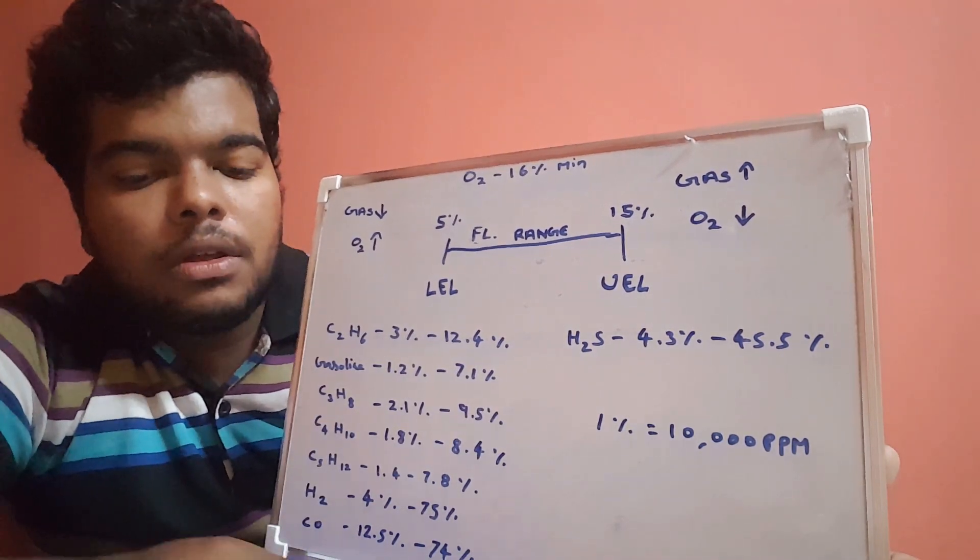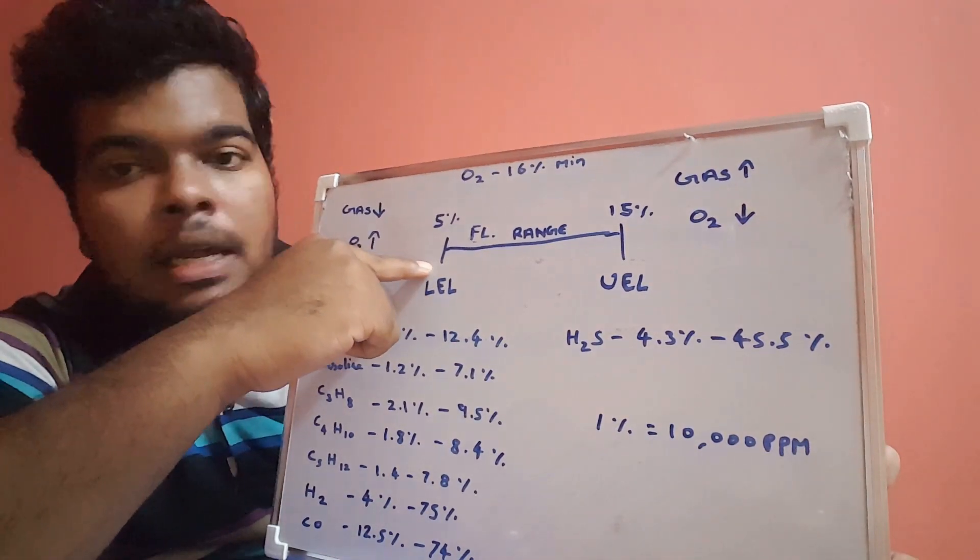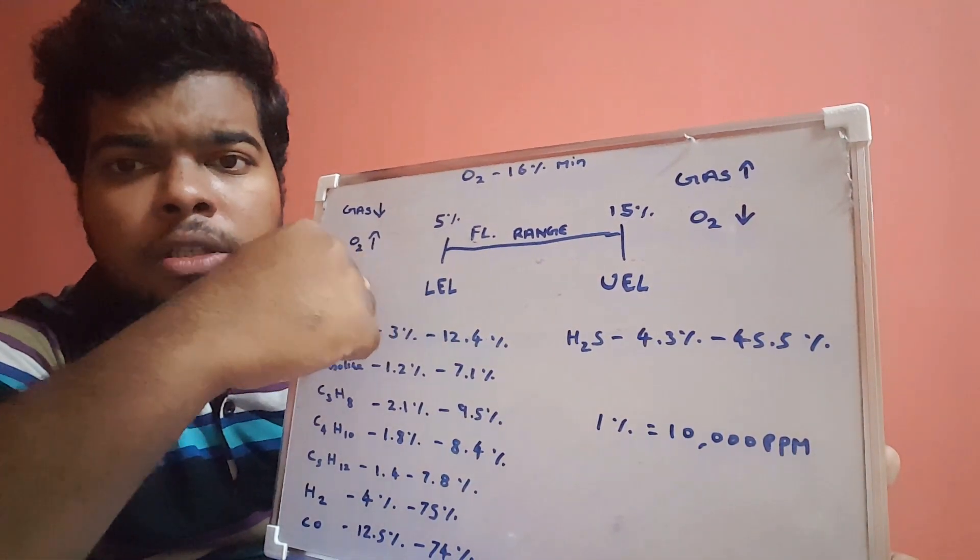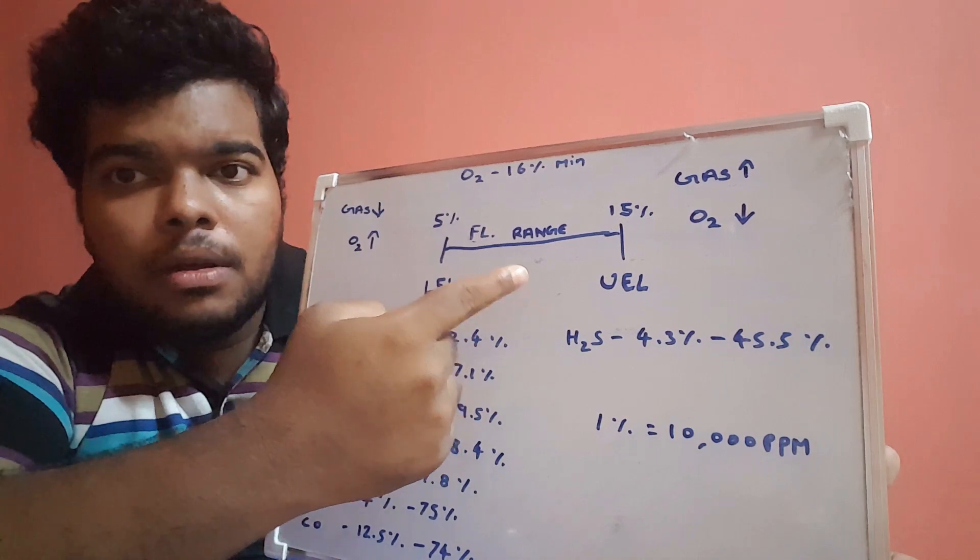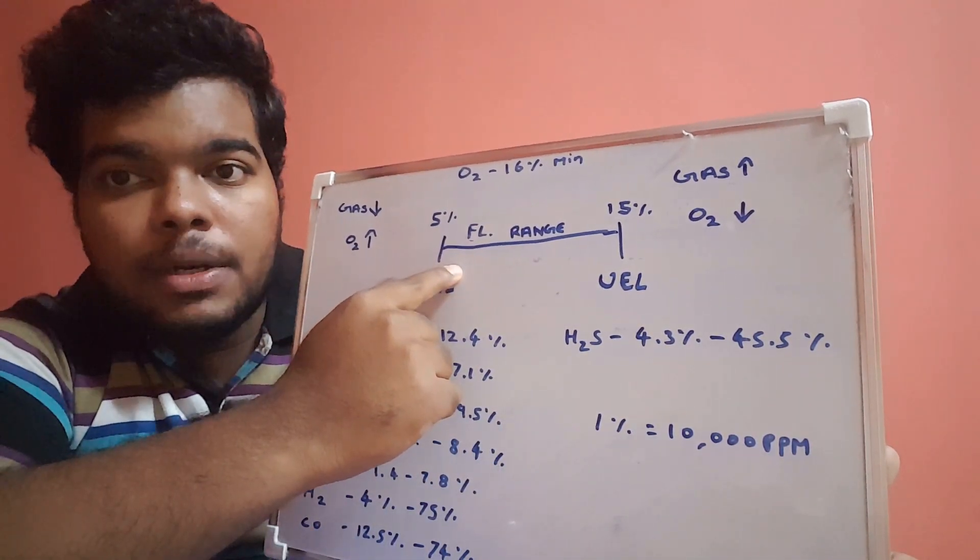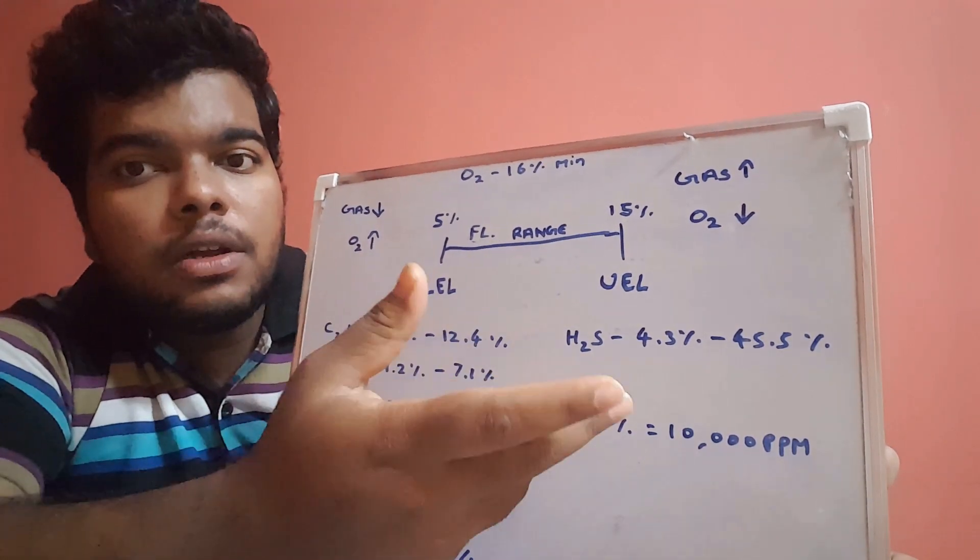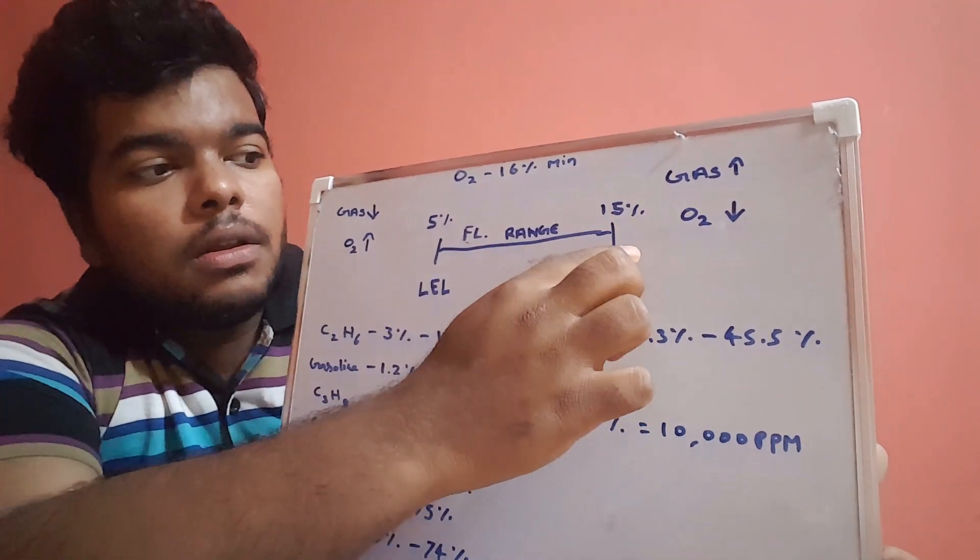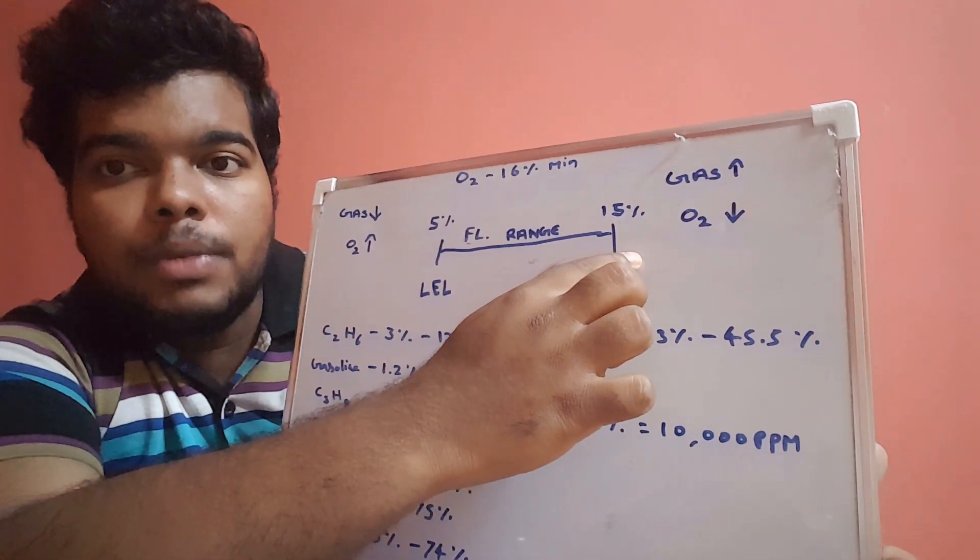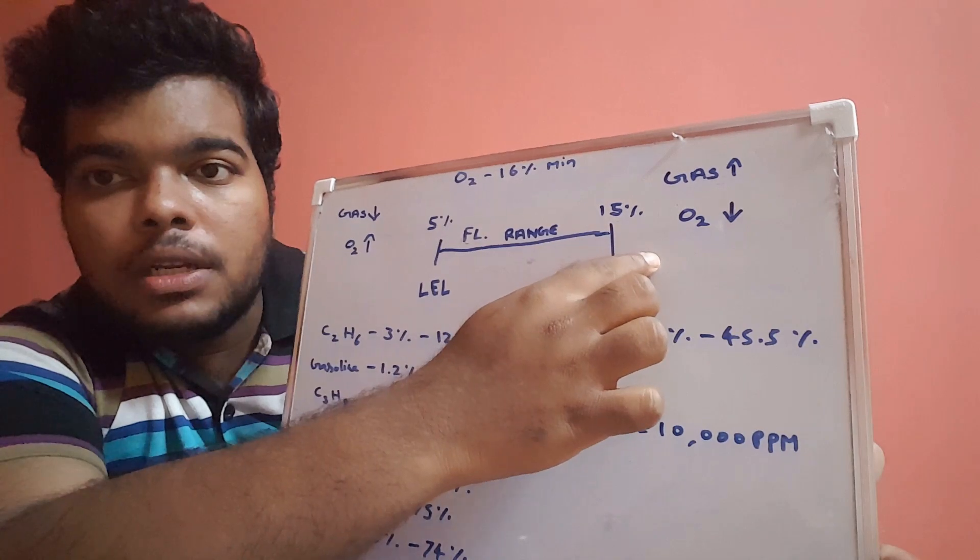When it comes to LEL values, it will detect from 0 up to 15, but the alarm will not be on until it reaches 5 percentage. When it reaches 5 percentage, the alarm will turn on. When it goes beyond 16 and 17 percentage, I mean above 15 percentage, definitely the oxygen level will go down first.